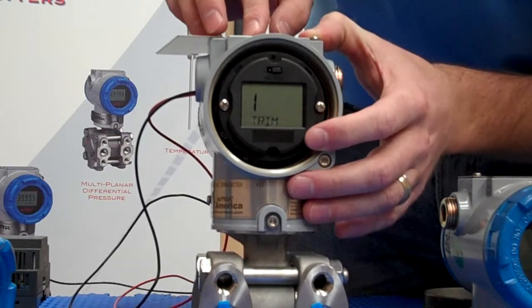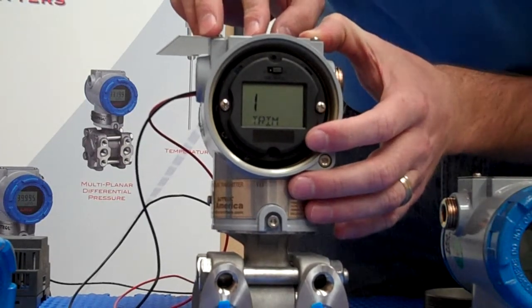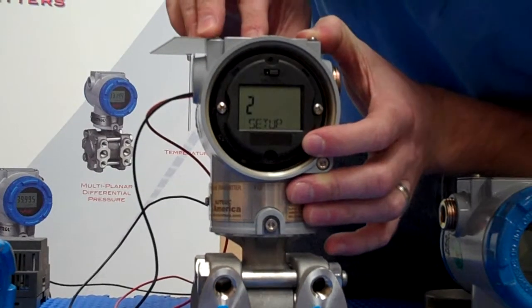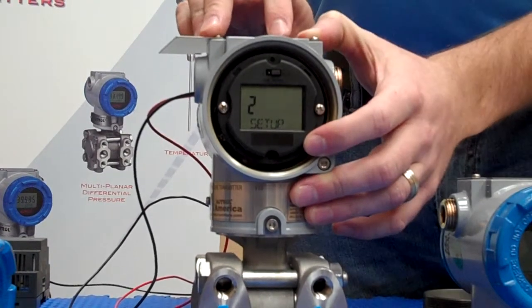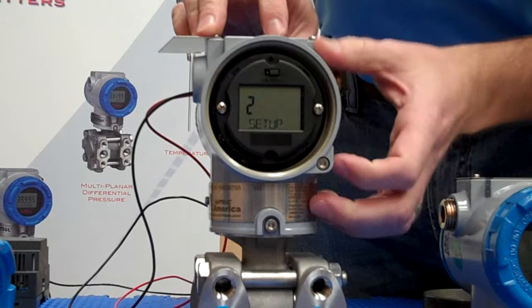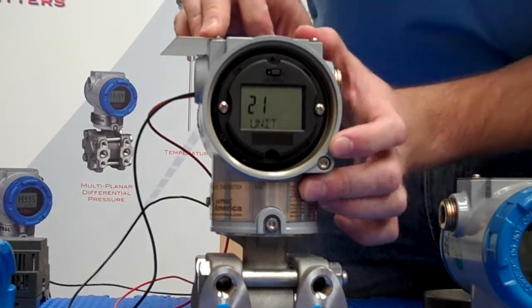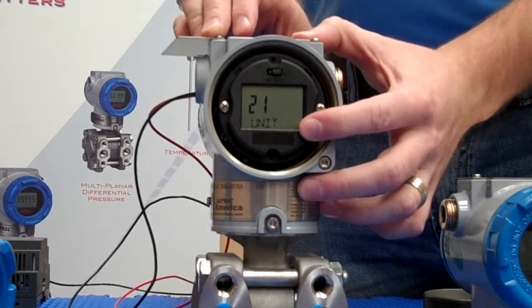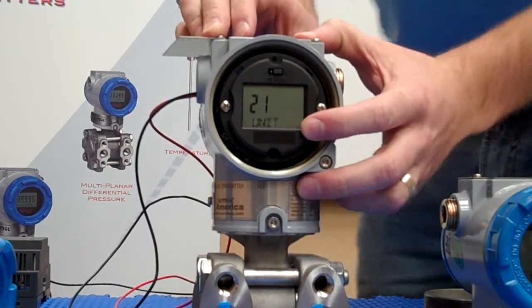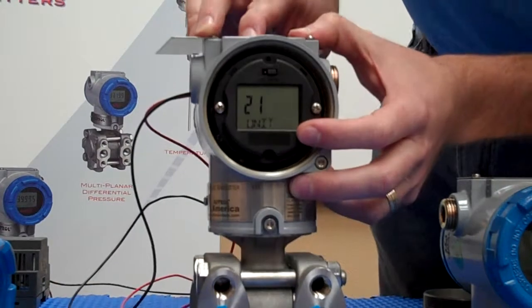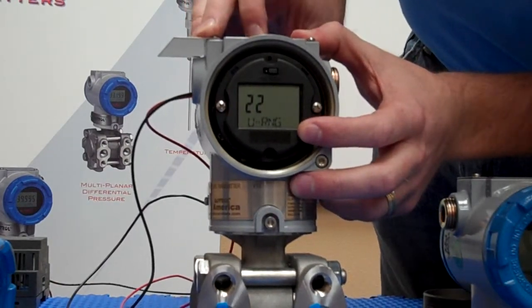So let's go back to setup, where we're going to make our upper range value change. We'll use the zero button, push and hold, and let go. To access the menu, we'll hit the span button and let go. This will get us to 21. We're going to make our change in submenu 22. So again, we hit zero, wait for the change, and let go.